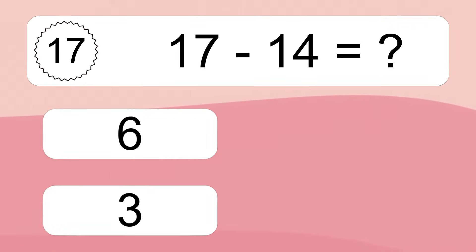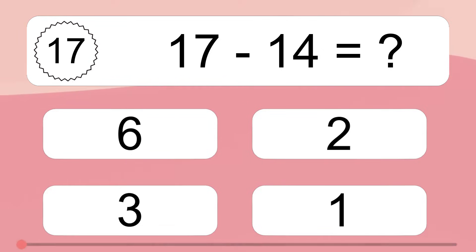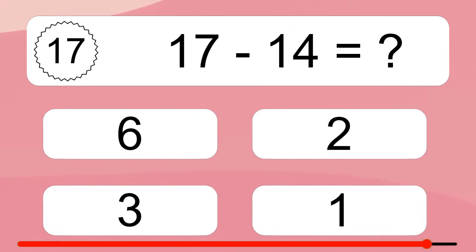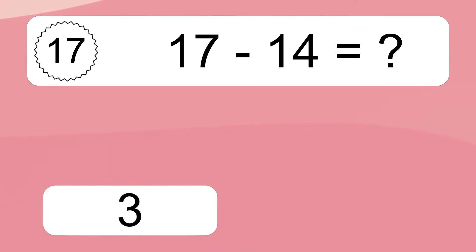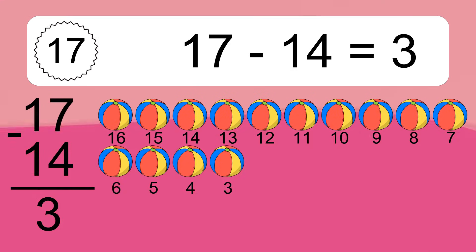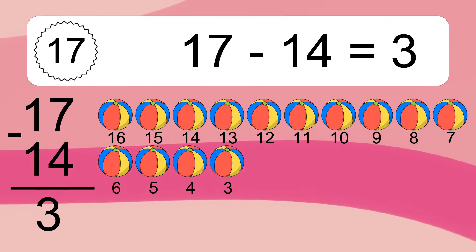17 minus 14 equals what? 17 minus 14 equals 3. Let's count it: 16, 15, 14, 13, 12, 11, 10, 9, 8, 7, 6, 5, 4, 3.